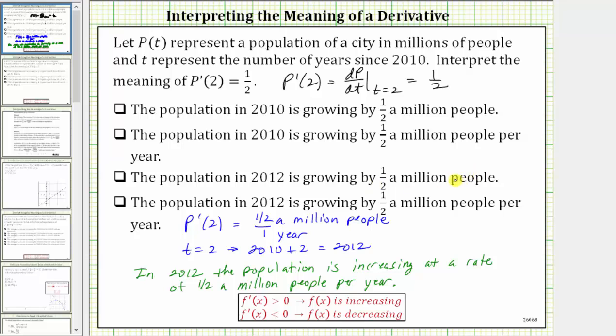And the fourth choice is the population in 2012 is growing by half a million people per year, which is the same as saying in 2012, the population is increasing at a rate of half a million people per year. The correct choice is this sentence.